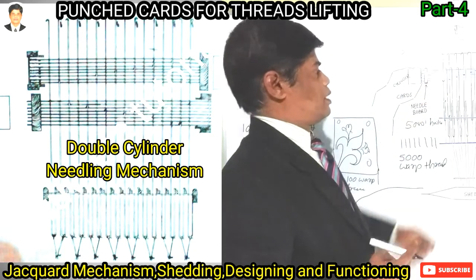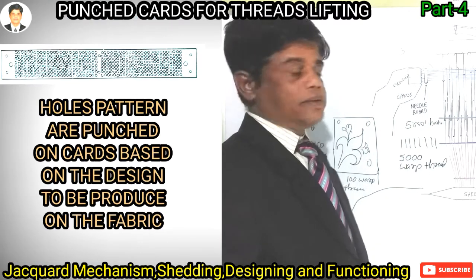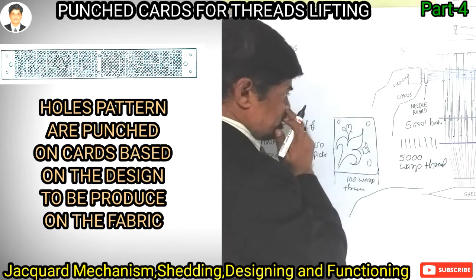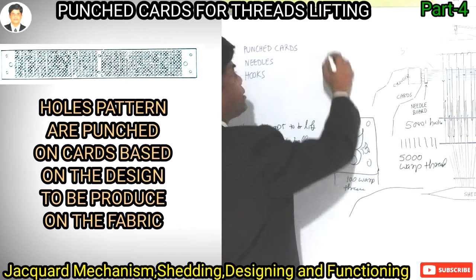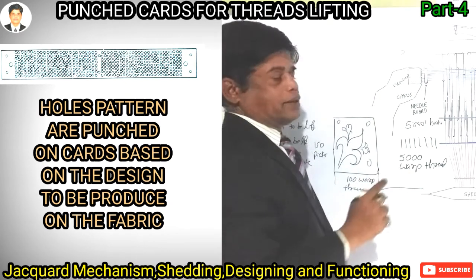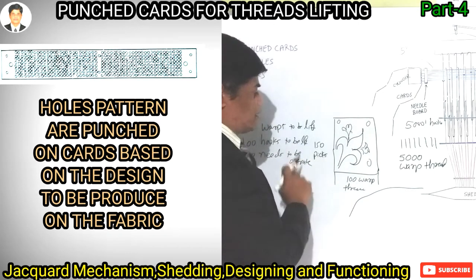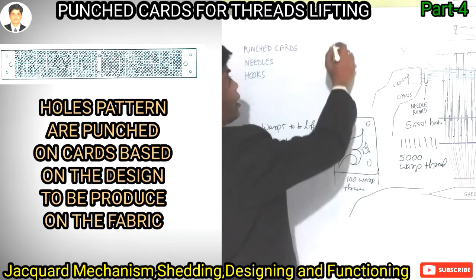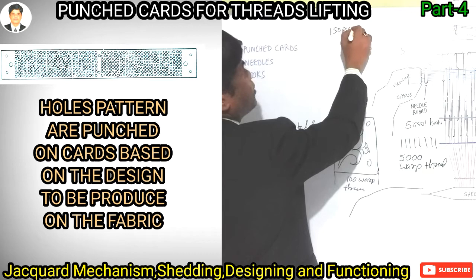Three needles are operated — how are they operated? Based on punched cards. Say there are 100 warp threads. To produce a fabric with 100 warp threads, how many picks are required? 150 picks are required.